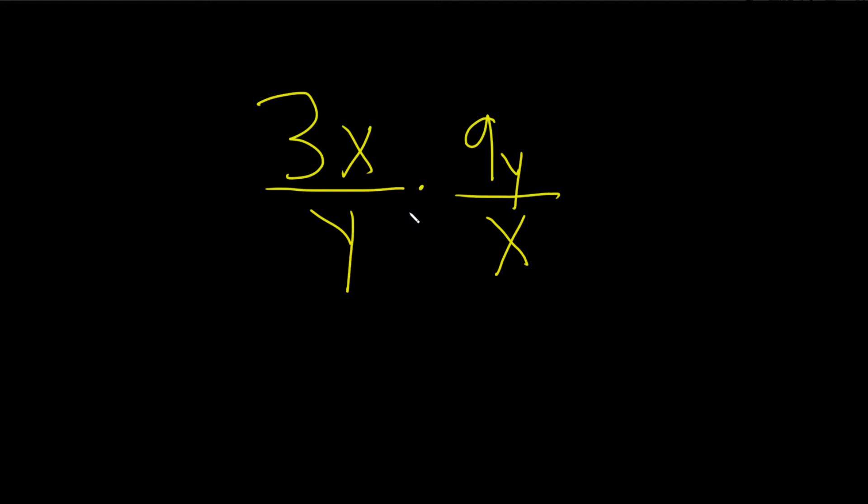Remember, when you're multiplying fractions like this, things on the top are allowed to cancel with things on the bottom. So for example, here we have an x, and here we have an x. So we can just cross it out.